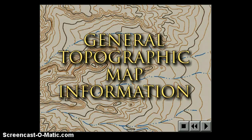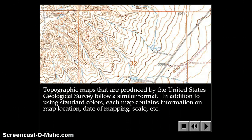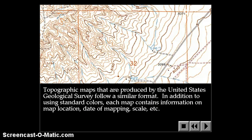We're going to look at some general information that you can find on all USGS topographic maps in this video. Topographic maps produced by the United States Geological Survey follow a similar format. In addition to using standard colors, each map contains information on map location, date of mapping, scale, etc.